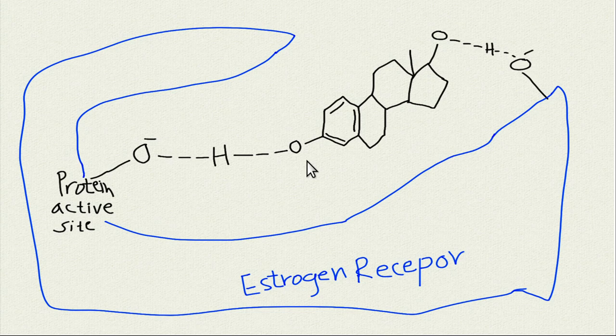The estrogenic chemical — like estradiol — forms a hydrogen bond with an estrogen receptor. The estrogen receptor is not very fussy about what is attached to the phenol group, so there are lots and lots of chemicals with estrogenic properties that interact with the estrogen receptor.